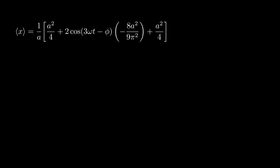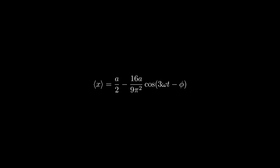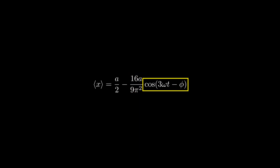Now that we've solved all three integrals, we've successfully calculated the expectation value of position x. From this result, we can see that ⟨x⟩ shows oscillatory behavior: it consists of a constant term a/2, and a time-dependent term with amplitude 16a/(9π²), oscillating at a frequency of 3ω with a phase shift of phi. This means introducing a relative phase between ψ₁ and ψ₂ shifts the oscillations in time compared to our previous result.